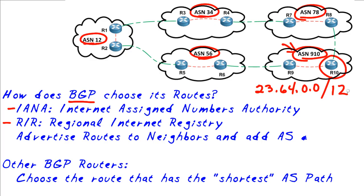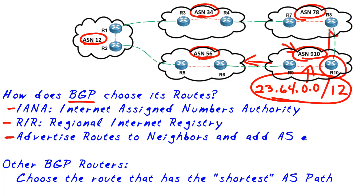So how does this fit in with BGP? If this autonomous system has been given this address space to advertise and share with the world, the job of BGP is to do exactly that. Once we have those networks installed inside our autonomous system, our next job is to advertise those routes to neighbors. We're going to advertise the routes to ASN 56 and up to ASN 78, and these autonomous systems will also advertise and propagate those routes all the way across the internet.